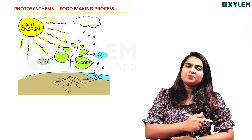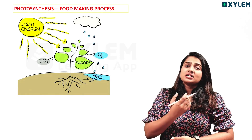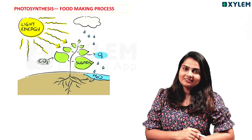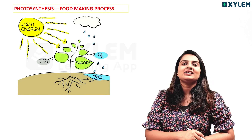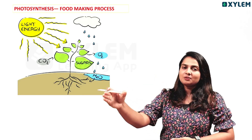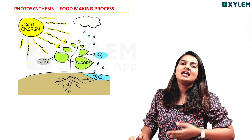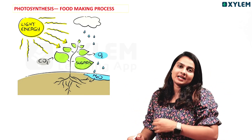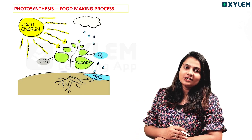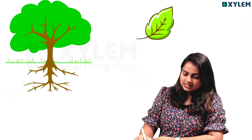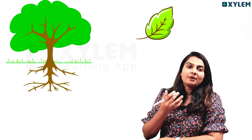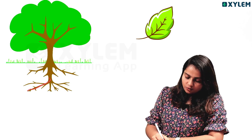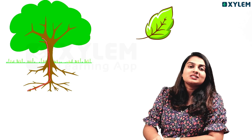We are going to talk about the first step. How do plants make food? In one of our steps, we need to understand photosynthesis and how plants produce food. Water and minerals are absorbed.